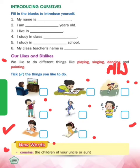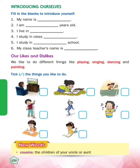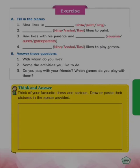New word: Cousins - cousins kaunse hote hai? Jo children hote hai aapke uncle aur aunt ki - woh kya hote hai? Cousins. Chacha chachi, tauji taiji ke jo bachche hote hai, unko hum cousins bolte hai. Now turn to the next page, page number 199.